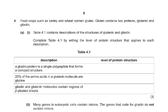Starting with question number 4. Food crops such as barley and wheat contain gluten. Gluten contains two proteins: Glutenin and Glyadin. Table 4.1 contains descriptions of the structures of Glutenin and Glyadin. Complete Table 4.1 by writing the level of protein structure that applies to each description.